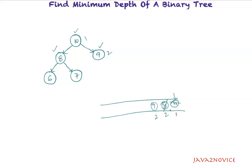We dequeue node 8, which is not a leaf node. Next we dequeue node 9, which is a leaf node. Its depth is 2, which is the minimum depth of the given binary tree.